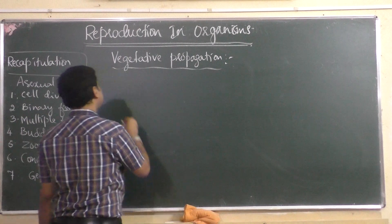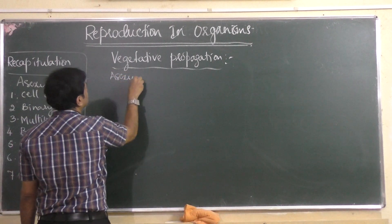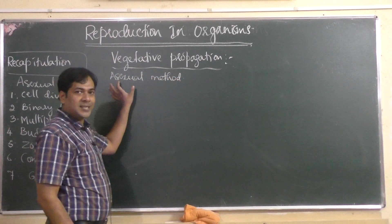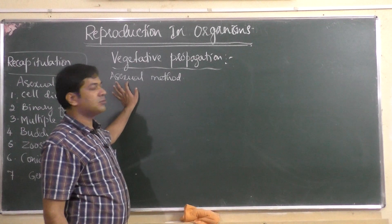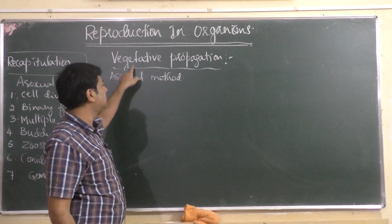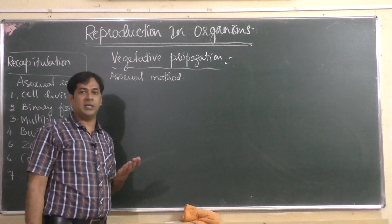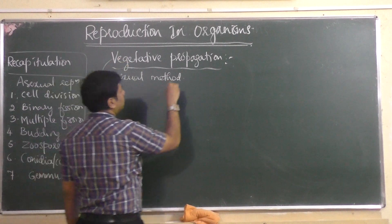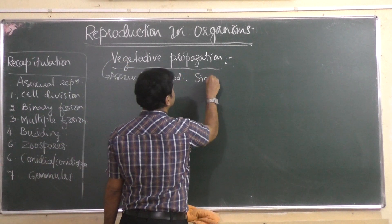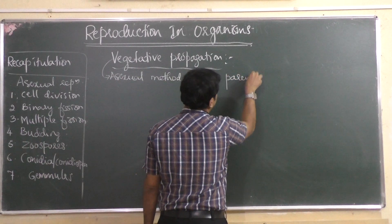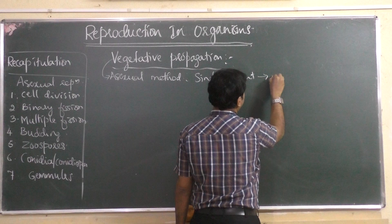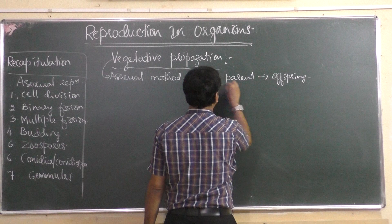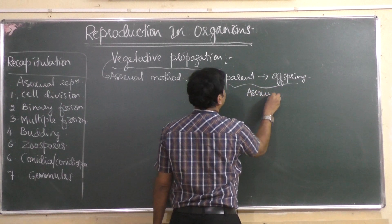Vegetative propagation is also an asexual method only. The word 'asexual' is used for animals; the same method in plants is called 'vegetative.' Vegetative propagation is also asexual reproduction because a single parent is involved — a single parent produces offspring.